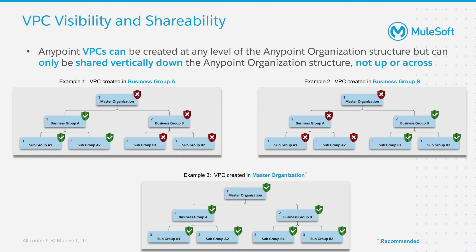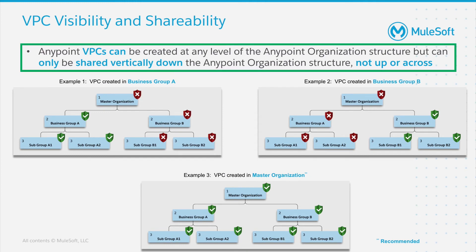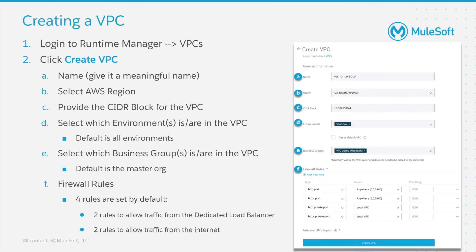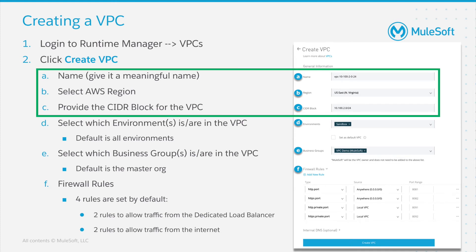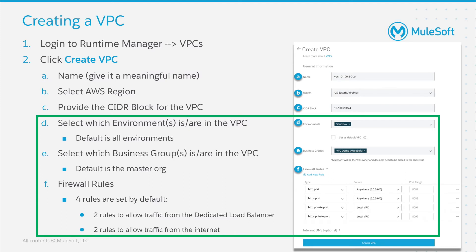As mentioned earlier, an important planning consideration is where to provision the VPC. We recommend provisioning them at the top level or master organization so that you have the flexibility to share it with any of the sub-organizations. It's important to remember that a VPC cannot be shared across or up from a sub-organization. Even though multiple environments or business groups share a VPC, they do still retain individual permissions on who can deploy or modify a deployment. We will have separate videos on the detailed steps to building a VPC, but the key point to remember is that VPC setup is completely self-serve, and points A, B, and C on this slide cannot be changed once a VPC has been created. Points D, E, and F can be adjusted as needed depending on how your requirements evolve over time.